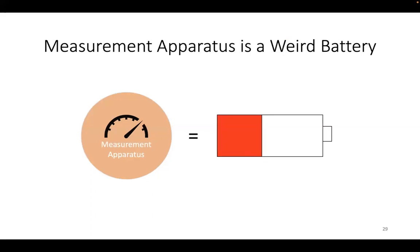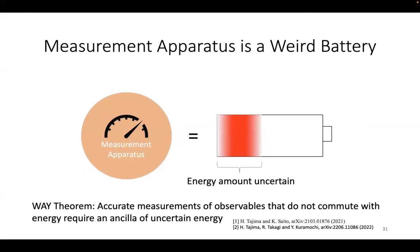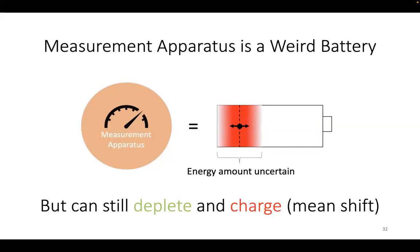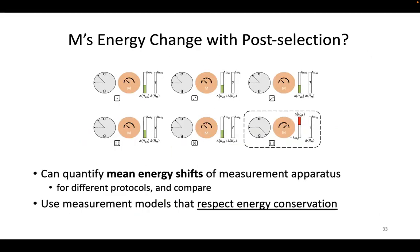The caveat to all this is that the measurement apparatus is a kind of weird battery—it doesn't actually have a well-defined amount of energy. The WAY theorem says that to measure observables that don't commute with energy accurately, we need some amount of energy uncertainty. So the battery's energy should be uncertain for the sorts of interesting measurements we want to perform. Even if it has an uncertain energy, it does have a mean energy, and that mean energy can increase or decrease. We can quantify the mean energy shift of the measurement apparatus for different protocols and compare, to figure out if there are protocol-independent results. We want to use measurement models that respect energy conservation so that we're really studying energy conservation in quantum mechanics.